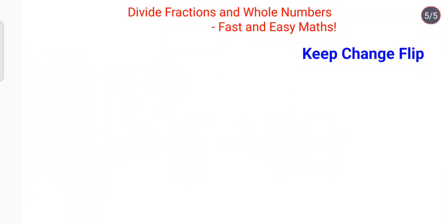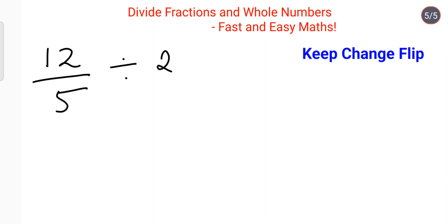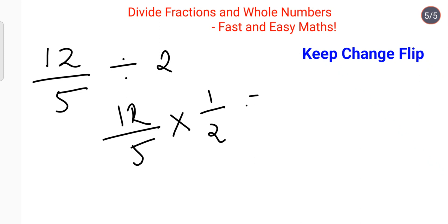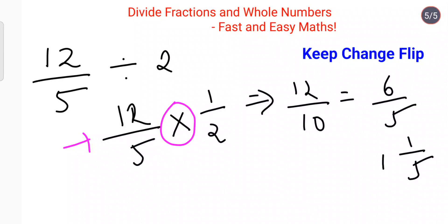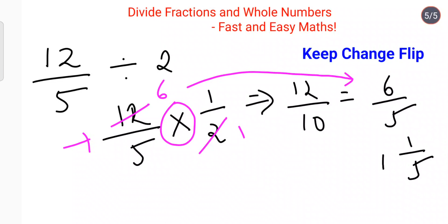Now let's see what happens when the final answer can be reduced. Take 12 upon 5 divided by 2. Keeping it as is, changing to multiplication, and flipping 2 to 1 upon 2 gives 12 upon 10. Both are even so divide by 2 to get 6 upon 5, which is 1 and 1 upon 5. As a shortcut, you can cancel directly before multiplying — cancelling 12 and 2 gives 6, landing straight at 6 upon 5.